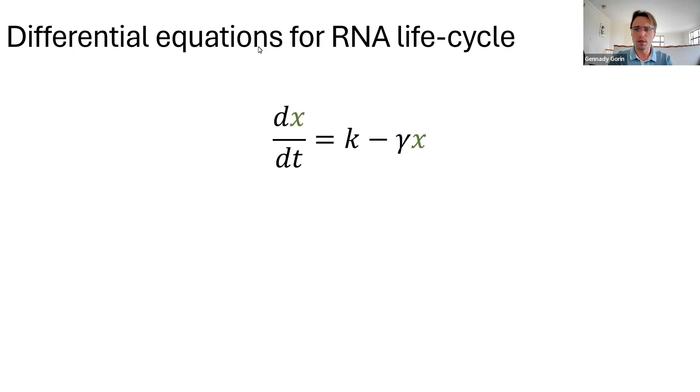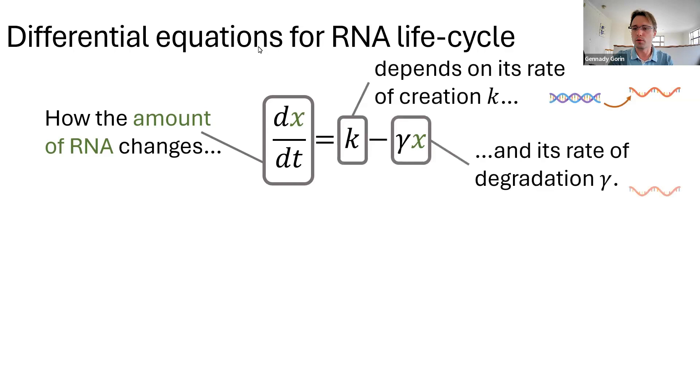We can look at this term by term. Total rate of change in RNA has a contribution from creation and from degradation. And this gives us trajectories that look like this. We start off with a large rate of change, but then we go to equilibrium. And notice the shape, because it will reappear.